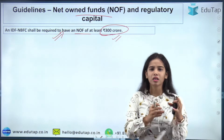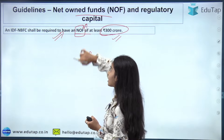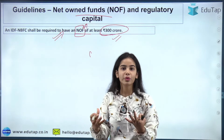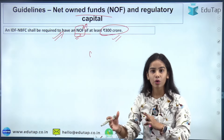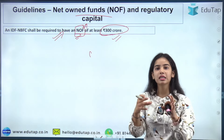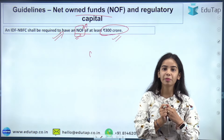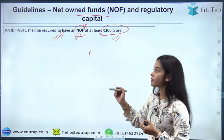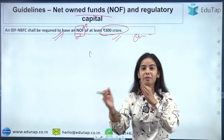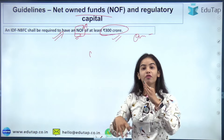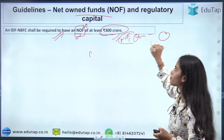The net owned fund has many small components — the paid-up equity capital, free reserves, and capital reserves that the company owns, minus the shares of its subsidiaries. If the company has purchased the shares of its own subsidiaries, that is deducted to arrive at the net owned fund. This is the static part you should study in detail.